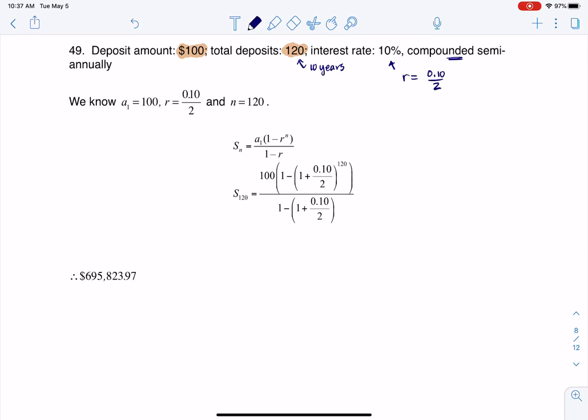So you can imagine that if you're putting in $100 and then you get some interest, and then the next month you put in $100 and you're getting some more interest, and you do this 120 times.